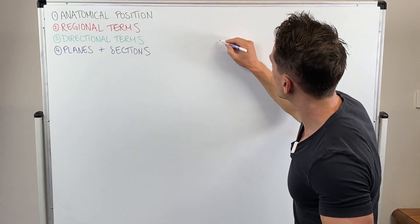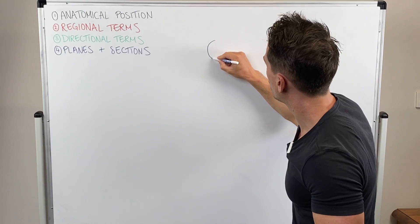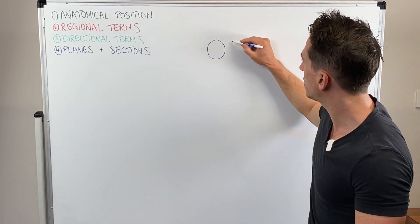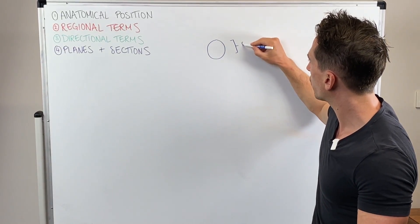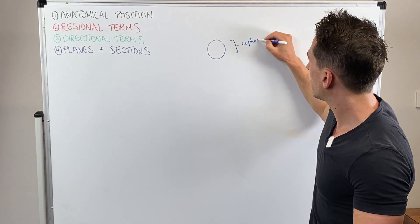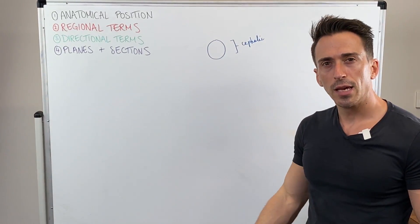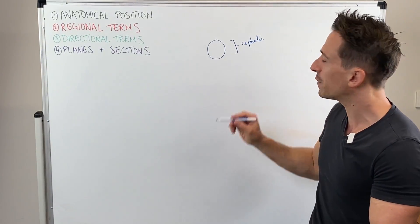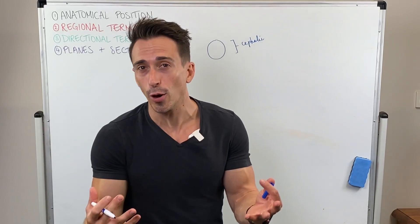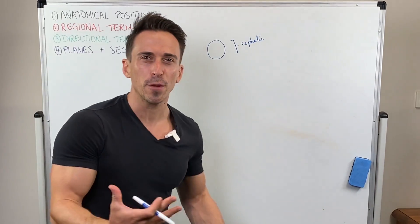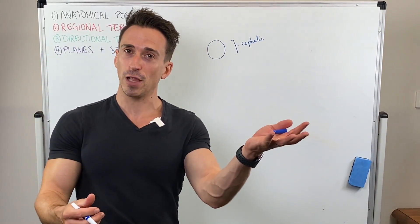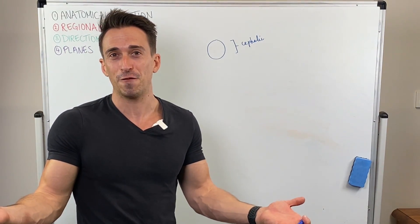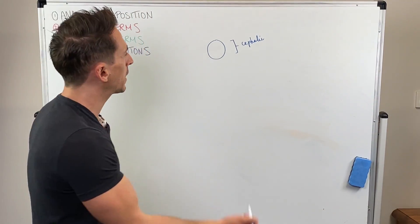Now we don't call it the head in anatomy. The term we use is the cephalic region. Cephalo is Latin for head. You can think of a cephalopod — what's a cephalopod? A cephalopod is an octopus. Cephalo means head, pod meaning feet. An octopus is pretty much just head and feet. So cephalo means head.